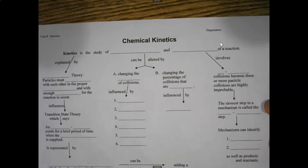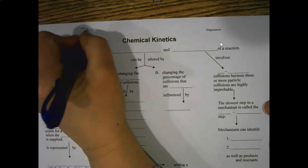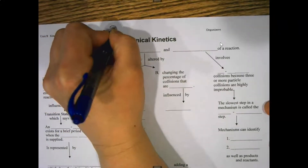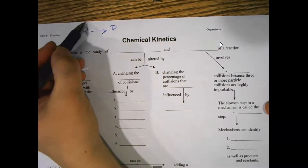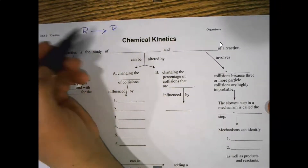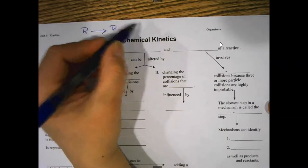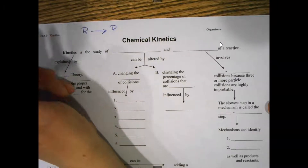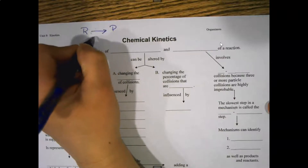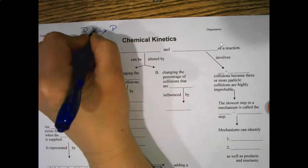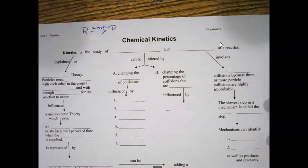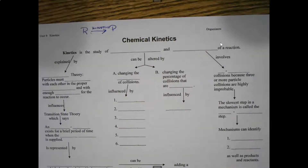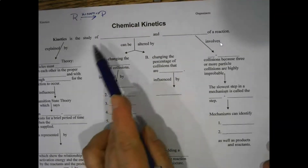Up to this point, what we've done is we've taken a look at reactants yielding products. We know a lot about the properties of reactants and products, and we know how to show the reaction in a balanced equation. What we don't know is what takes place during this arrow, and that's really what kinetics is all about — kinetics is taking a look at what takes place during the arrow.